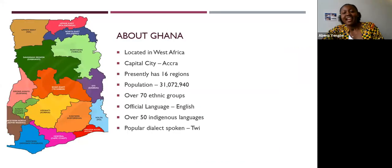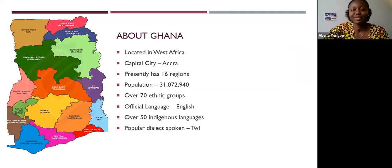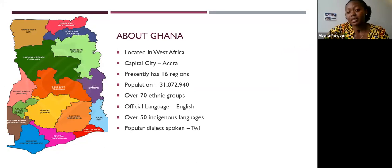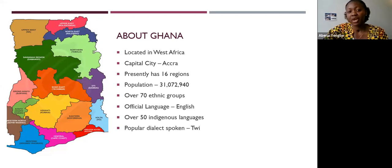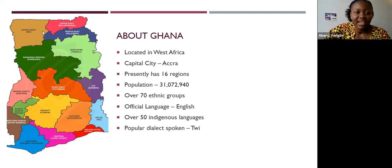Let's take a few minutes to learn about Ghana — facts that everyone has to know. Ghana is a country in Africa, located specifically in the West Africa region, with its capital city known as Accra. In the past Ghana had 10 regions, but in December 2018 there was a referendum held to add six more regions, so Ghana presently has 16 regions.